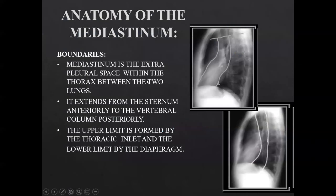Anatomy of the mediastinum. The mediastinum is the extrapleural space within the thorax between the two lungs. It extends from the sternum anteriorly to the vertebral column posteriorly. The upper limit is formed by the thoracic inlet and the lower limit by the diaphragm. The mediastinum is divided anatomically into superior and inferior mediastinum by Ludwig's plane.